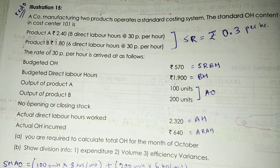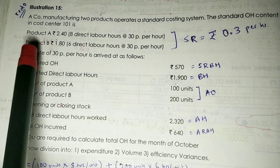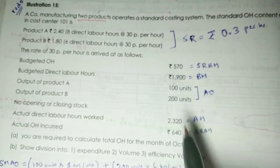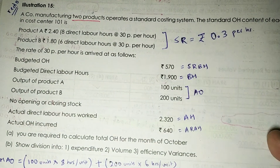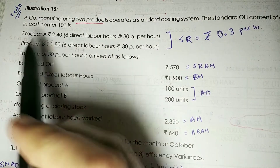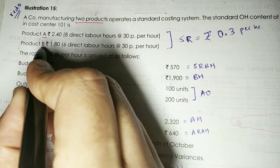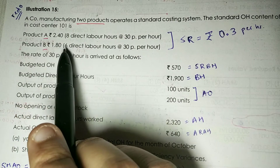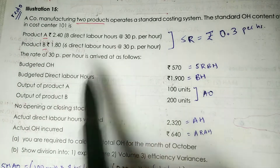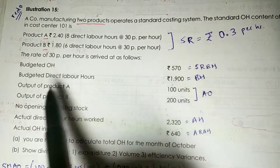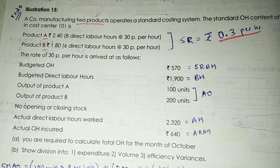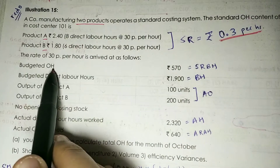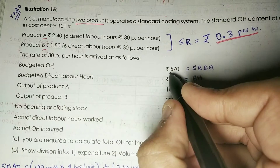Illustration number 15: a company manufacturing two products operates a standard costing system. The standard overhead content for cost center 101 — product A requires 8 direct labor hours and product B requires 6 direct labor hours. The standard rate is 30 paise per hour, i.e., 0.3 rupees per hour.